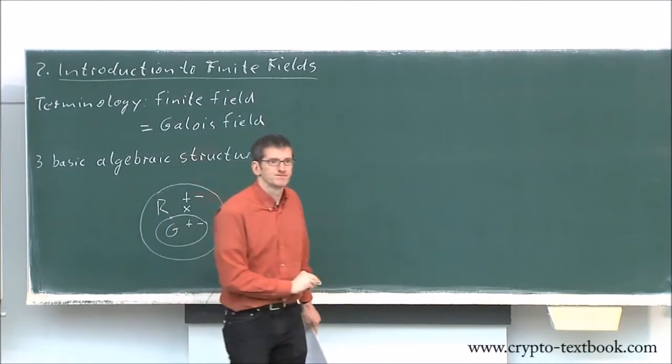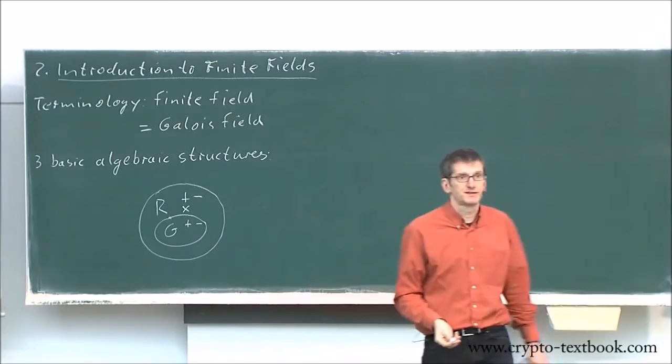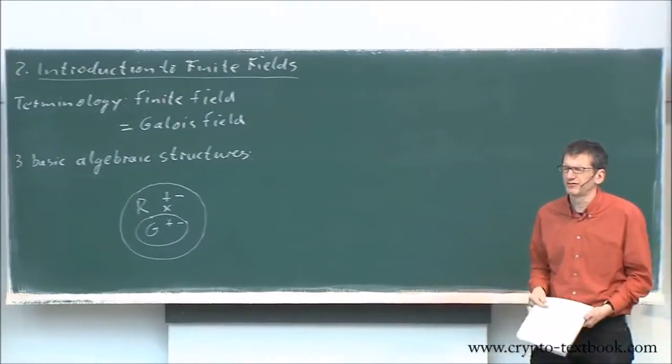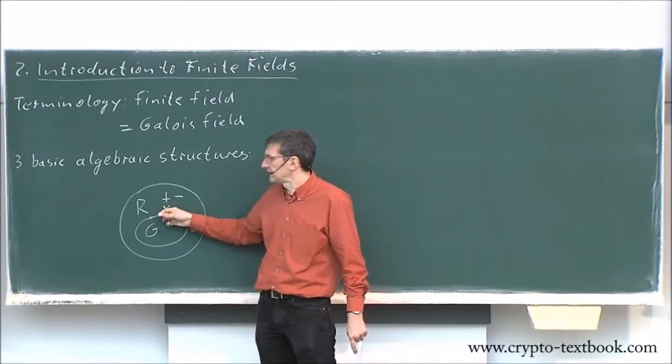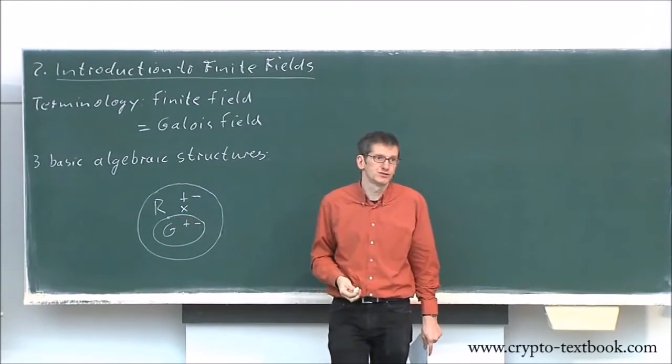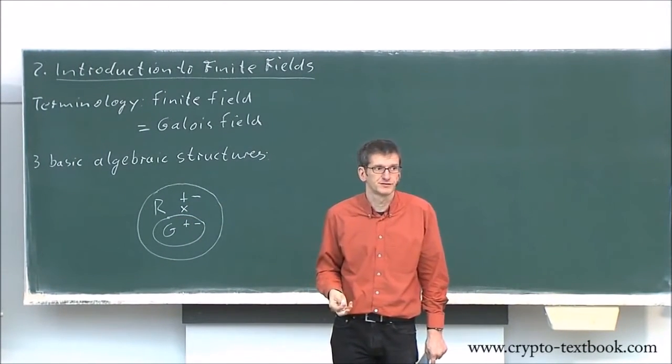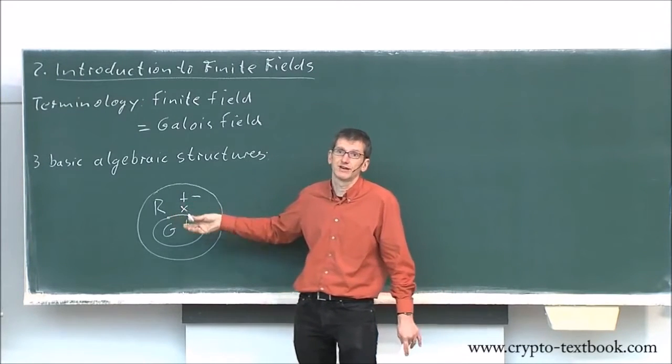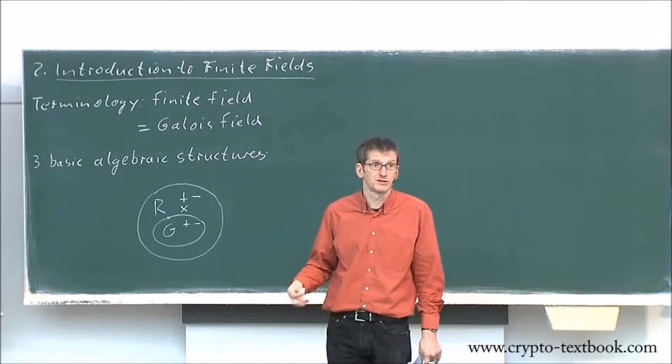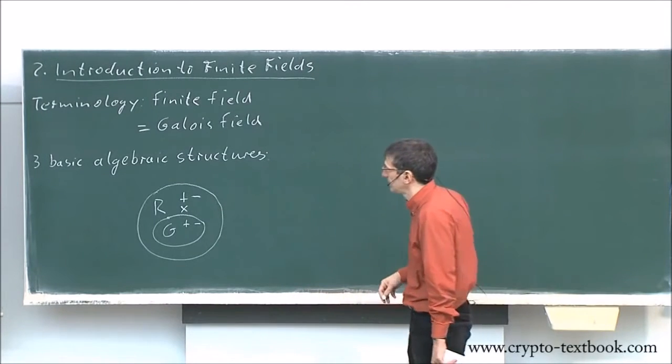You get a ring. One thing that is missing in a ring, and we did do that in the second lecture I believe, is that not all elements have a multiplicative inverse. So that means you can always multiply, but often you cannot divide. So not all elements—you cannot divide by some elements.